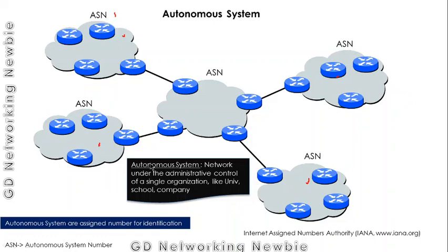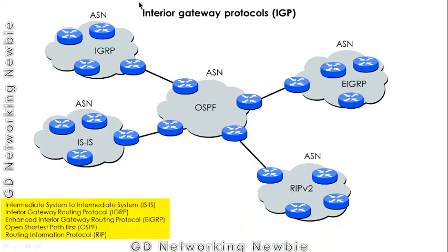These autonomous systems are assigned numbers for identification, known as autonomous system numbers. There is an organization that assigns these numbers — the Internet Assigned Numbers Authority (IANA) — which is the same organization responsible for assigning IP addresses.